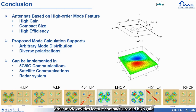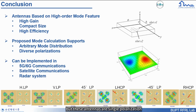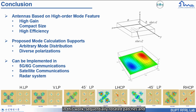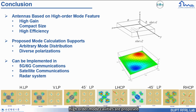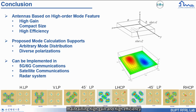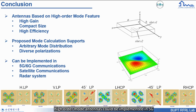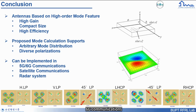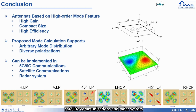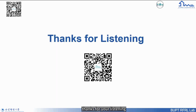In conclusion, antennas with high order mode cavities feature compact size and high gain, but these antennas are single polarization. In this work, sequentially rotated patches and high order mode cavities are proposed to overcome the problem while maintaining high gain and high efficiency. High order mode antennas could be implemented in 5G, 6G communications, satellite communications, and radar systems. Thanks for your listening. If you'd like, you can follow us on WeChat for more information about our lab.